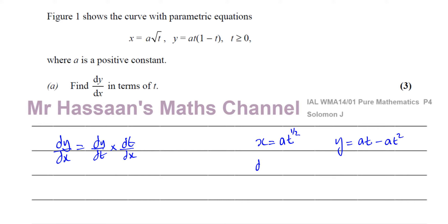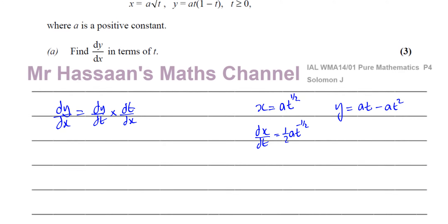So dx/dt is going to be a half times a times t to the power of minus a half, which simplifies to a over 2 root t. Therefore dt/dx is the reciprocal of this: 2 root t over a.